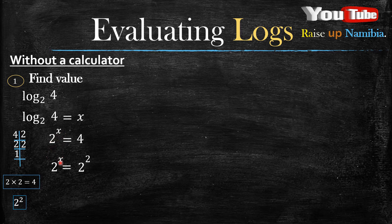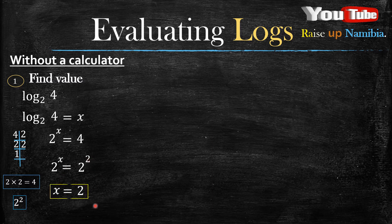We replace the 4 with 2 squared, and the 2 raised to the power x comes down the same way. From here, there is a rule that says if the bases are the same, our exponents are equal. So x equals 2, and just like that you have found your answer for the first question.